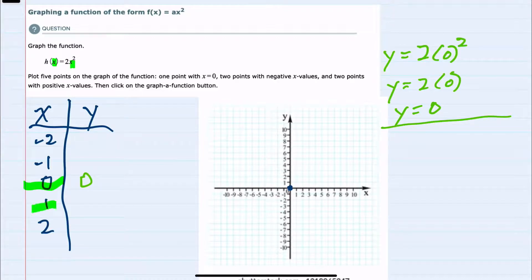Replacing x with 1 would give us 2 times 1 squared. Again, order of operations, doing the exponents first, 1 squared is 1, so 2 times 1 is 2.